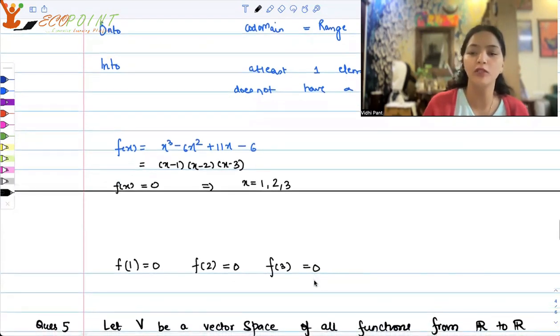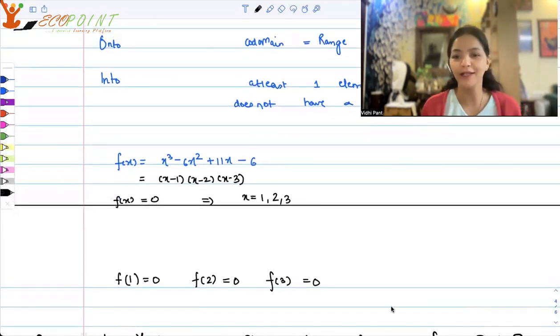What does it tell you about the nature of the function? It clearly tells you that there are three inputs which are giving you just the same output. So it's clearly a many-to-one function.